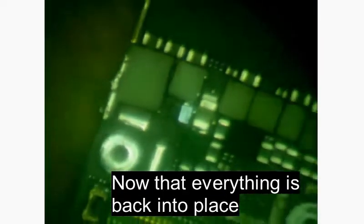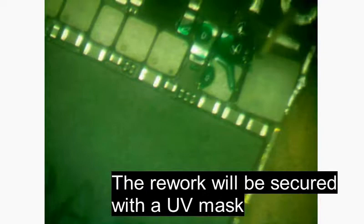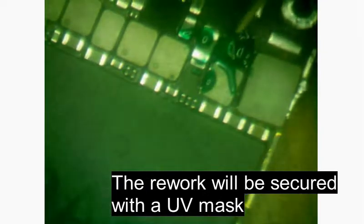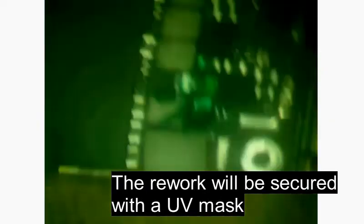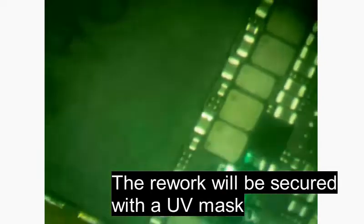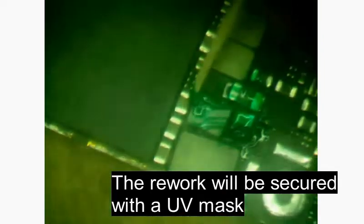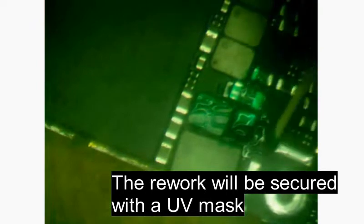Now that everything is back into place, the rework is going to be secured with a UV mask. So we're going to start by applying this UV mask and afterwards we're going to cure it under UV light for a few minutes. The UV mask is going to harden and help secure our microwires into place. And there we go, we're finally done.